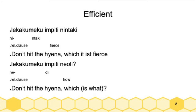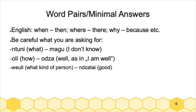In the last two sessions I went into word pairs and minimal answers — like in English 'when/then,' 'where/there,' 'why/because,' or in German similar pairs. You have to be really careful what you're asking for. I asked Nico after the shortest possible answers to questions with these words and got: for 'ntoni' meaning 'what,' 'magu' meaning 'I don't know'; for 'oli' meaning 'how,' 'adza' — you can apparently just ask 'oli' as a very short 'how are you' and get 'good.' Also 'what kind of person is this' — and 'tide' just means 'good.'